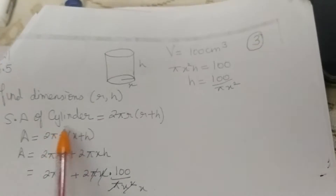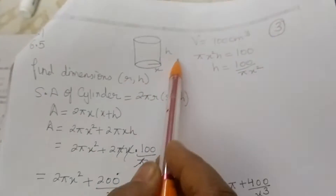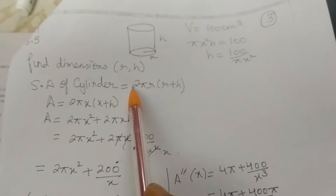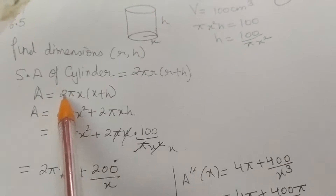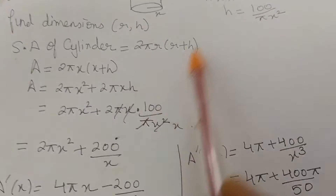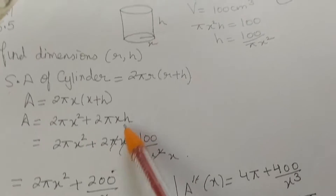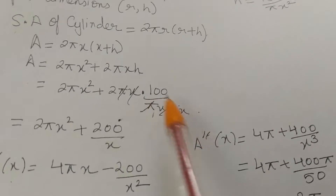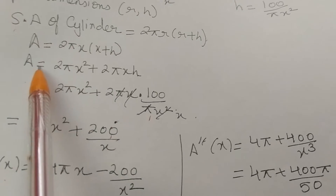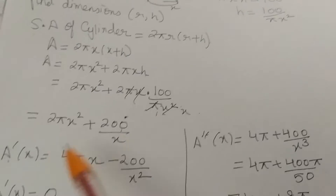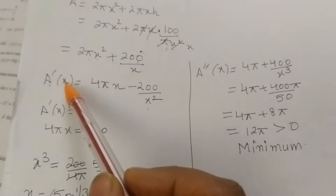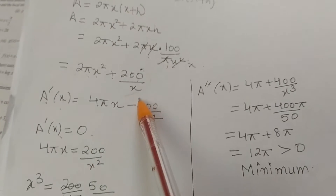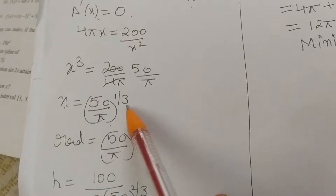Now, total surface area of the cylinder = 2πr(r + h) = 2πx(x + h) = 2πx² + 2πxh. Substituting h = 100 / (πx²), the 2πx and πx² terms partially cancel to give A = 2πx² + 200/x. Taking the derivative: dA/dx = 4πx − 200/x². Setting derivative equal to 0 and solving gives x = (50/π)^(1/3).